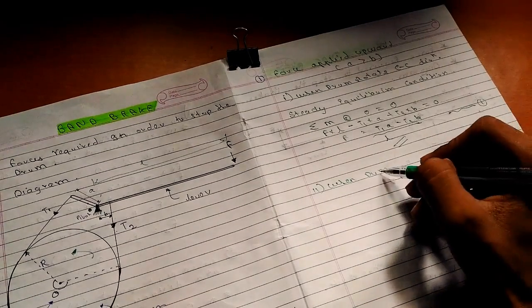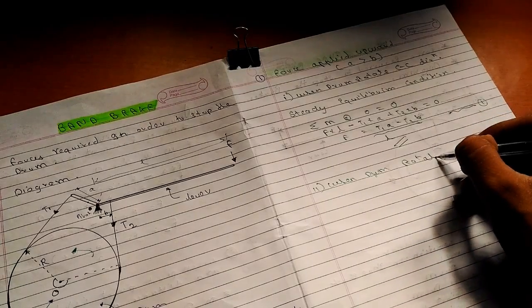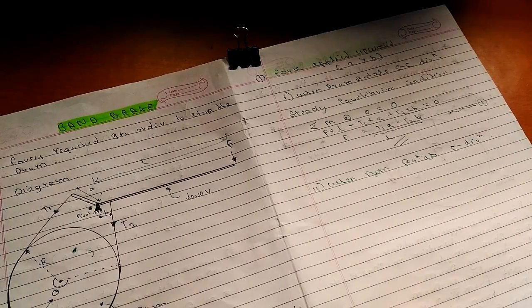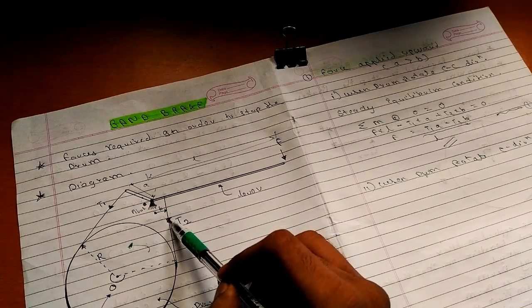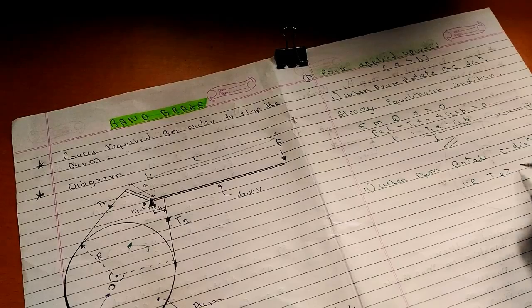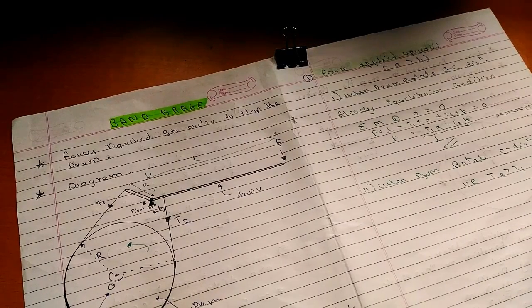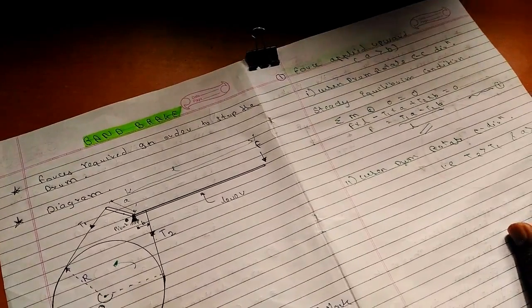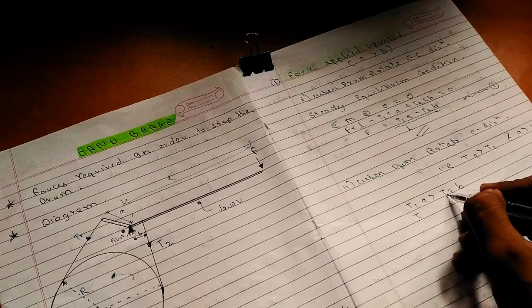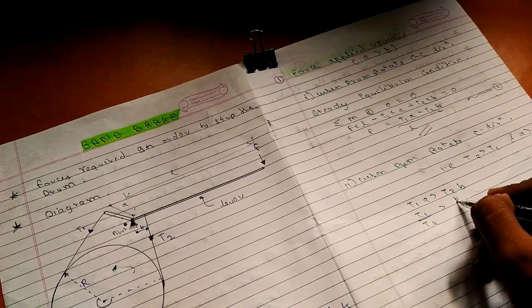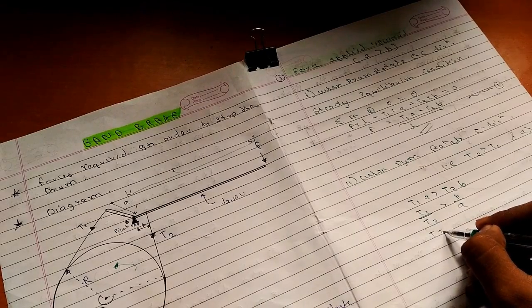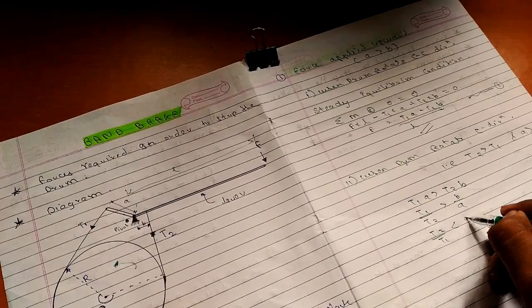Now for the second condition, when drum rotates in clockwise direction, in this case the tight and slack side get reversed. Now T2 is greater than T1, and also we know that A is greater than B. Then we can conclude that T1A is greater than T2B.